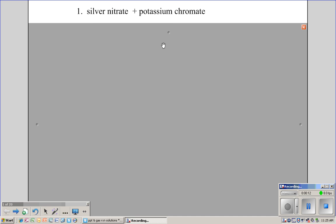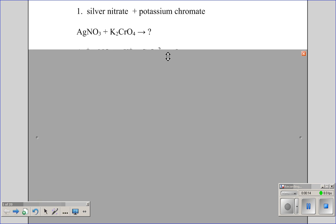Silver nitrate has the formula AgNO3, while potassium chromate has the formula K2CrO4.